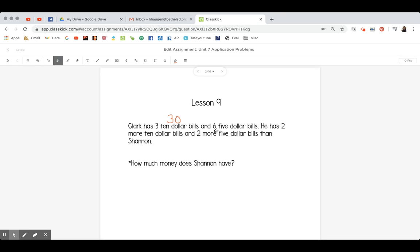And he has six $5 bills. Well, I'm going to count by fives six times. $5, $10, $15, $20, $25, $30.